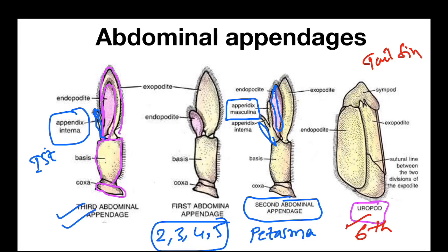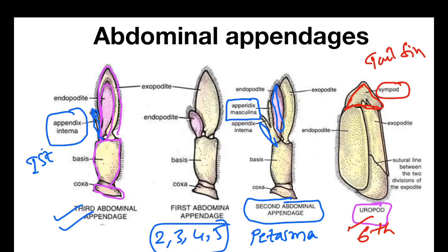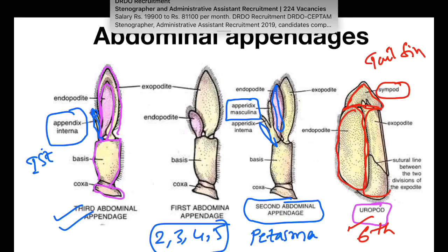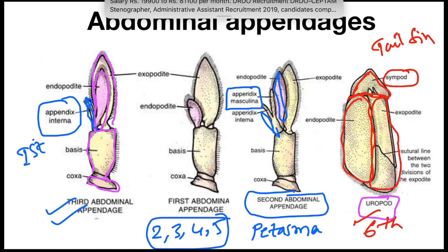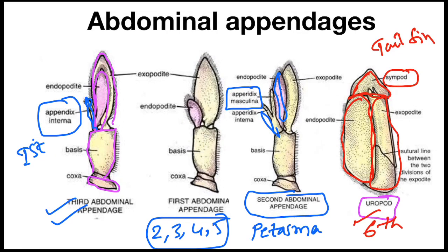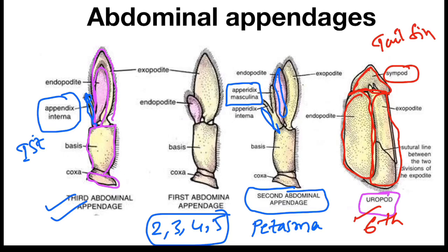The uropods help the prawn to perform a backward spring in water. The coxa and basis are fused in the protopodite of uropods, forming a structure called the sympod. The sympod has oar-shaped exopodite and endopodite structures, and these oar-shaped structures help the prawn to perform the backward spring in water.